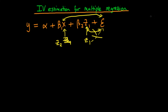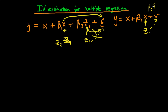Something you might ask is: why don't we just remove z1 from the original equation of interest, leaving y equals alpha plus beta 1 x plus some error v, and then use z1 as an instrument for x? Well, the problem is that v now essentially contains beta 2 z1, so z1 is going to be very highly correlated with this error term, making z1 a very poor instrument in that model.